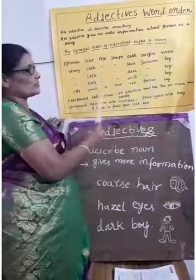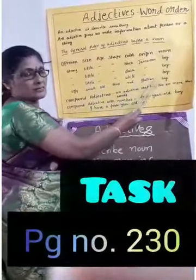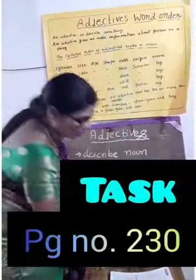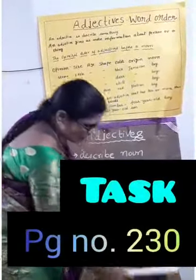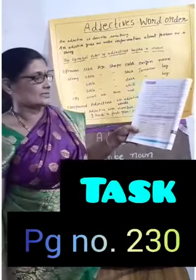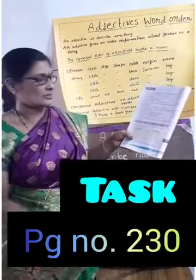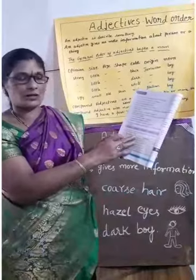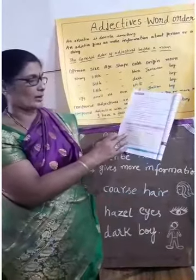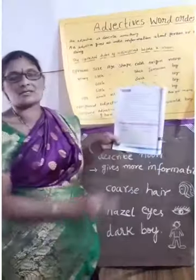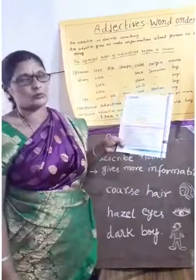Now, look for other words in the lesson that describe the two boys and write your words in the appropriate column — the white boy and the black boy. That is the homework for you.